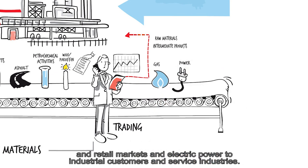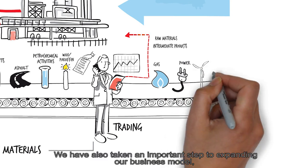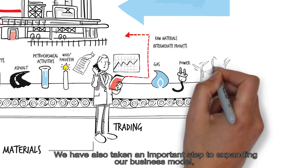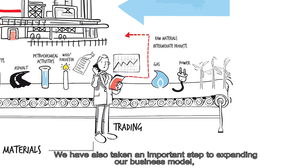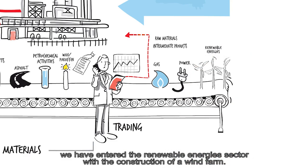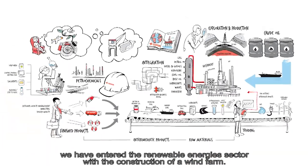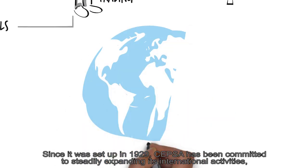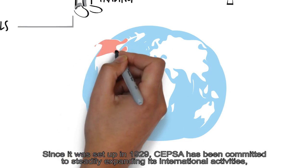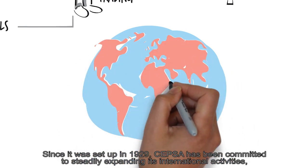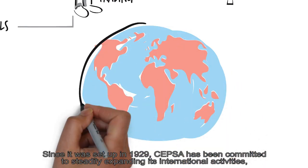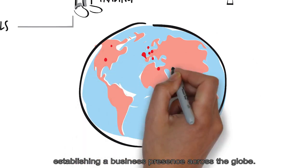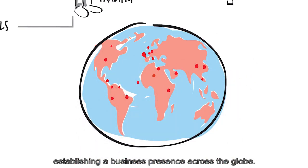We have also taken an important step to expanding our business model. We have entered the renewable energy sector with the construction of a wind farm. Since it was set up in 1929, CEPSA has been committed to steadily expanding its international activities, establishing a business presence across the globe.